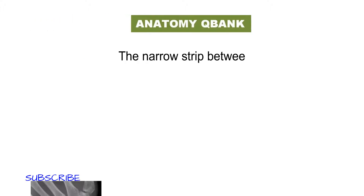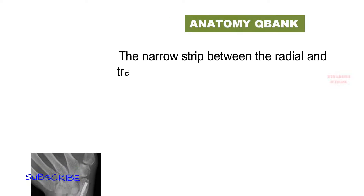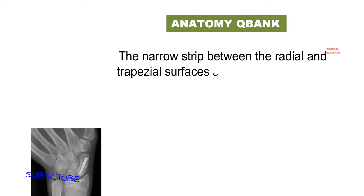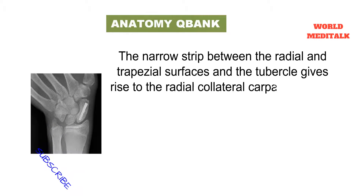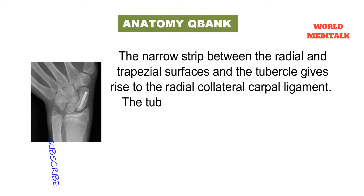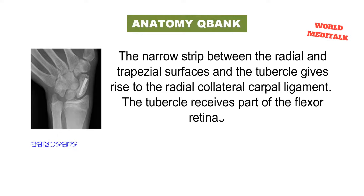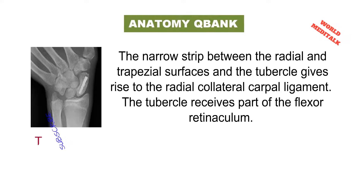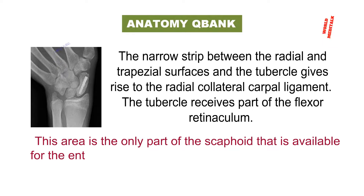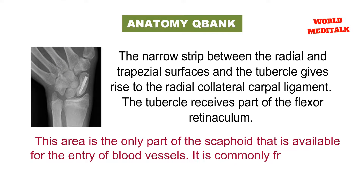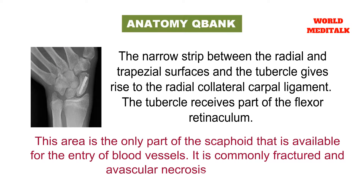The narrow strip between the radial and trapezoid surface and the tubercle gives rise to the radial collateral carpal ligament. The tubercle receives part of the flexor retinaculum. This area is the only part of the scaphoid available for the entry of blood vessels. It is commonly fractured, and avascular necrosis may result.